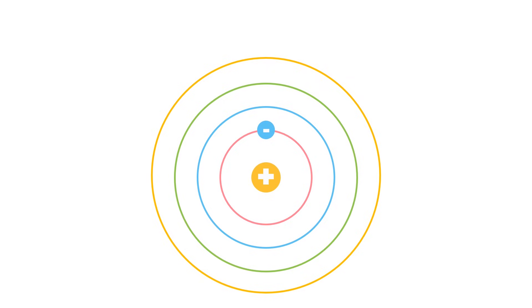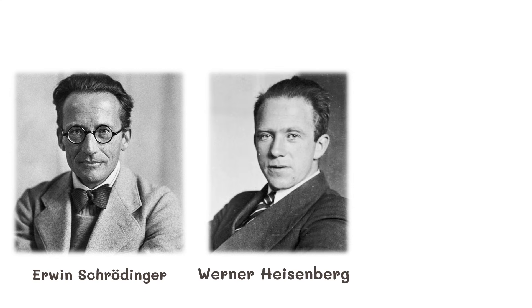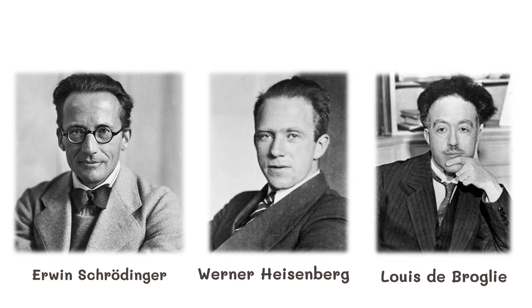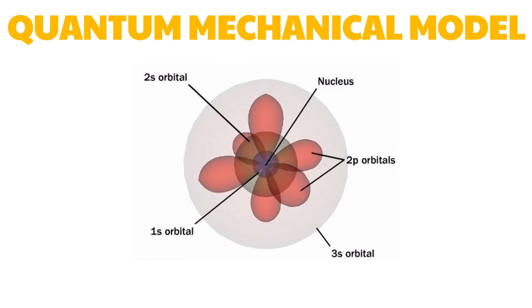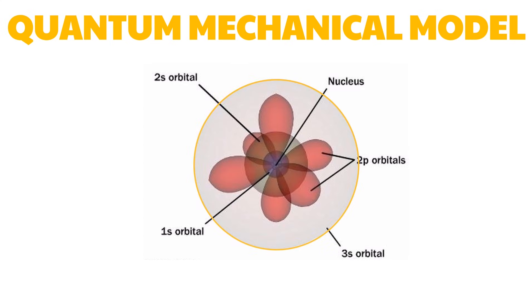Bohr's atomic model can only describe the atomic spectrum of an atom having only one electron, like that of hydrogen. Erwin Schrödinger, together with Werner Heisenberg and Louis de Broglie, made a refinement of Bohr's atomic model. Schrödinger used mathematical equations to describe the possibility of finding an electron in a certain location. This model is known as the quantum mechanical model of the atom. Based on this model, it would be impossible to plot a definite path or orbit for the moving electrons — we can only guess the most probable location of the electron in a given instant to be within a certain volume or region of space surrounding the nucleus.